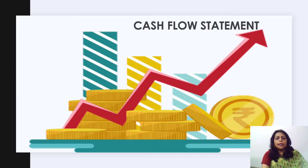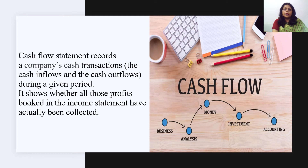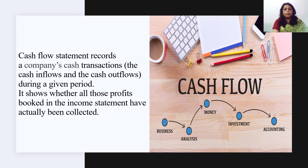The second kind of financial statement is the cash flow statement. The cash flow statement, or the statement of cash flows, is a financial statement that summarizes the amount of cash and cash equivalents entering and leaving a company. The cash flow statement measures how well a company manages its cash position — meaning how well the company generates cash to pay its debt obligations and fund its operating expenses. The cash flow statement complements the balance sheet and the income statement and is a mandatory part of the company's financial reports.